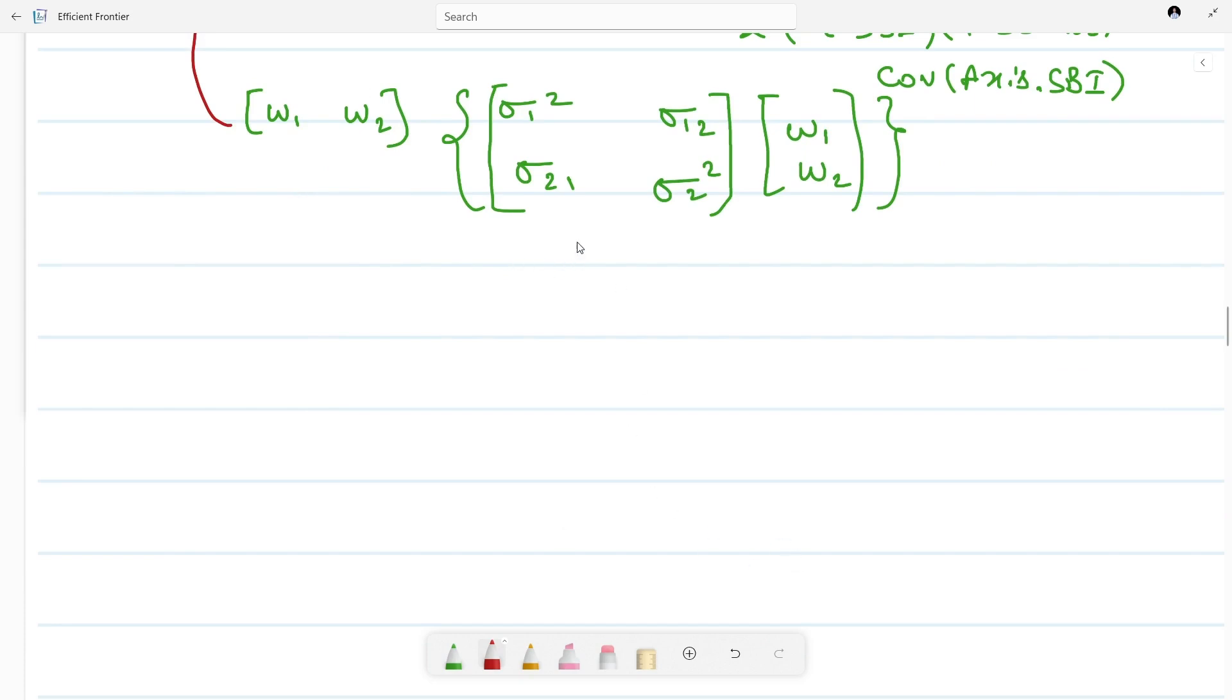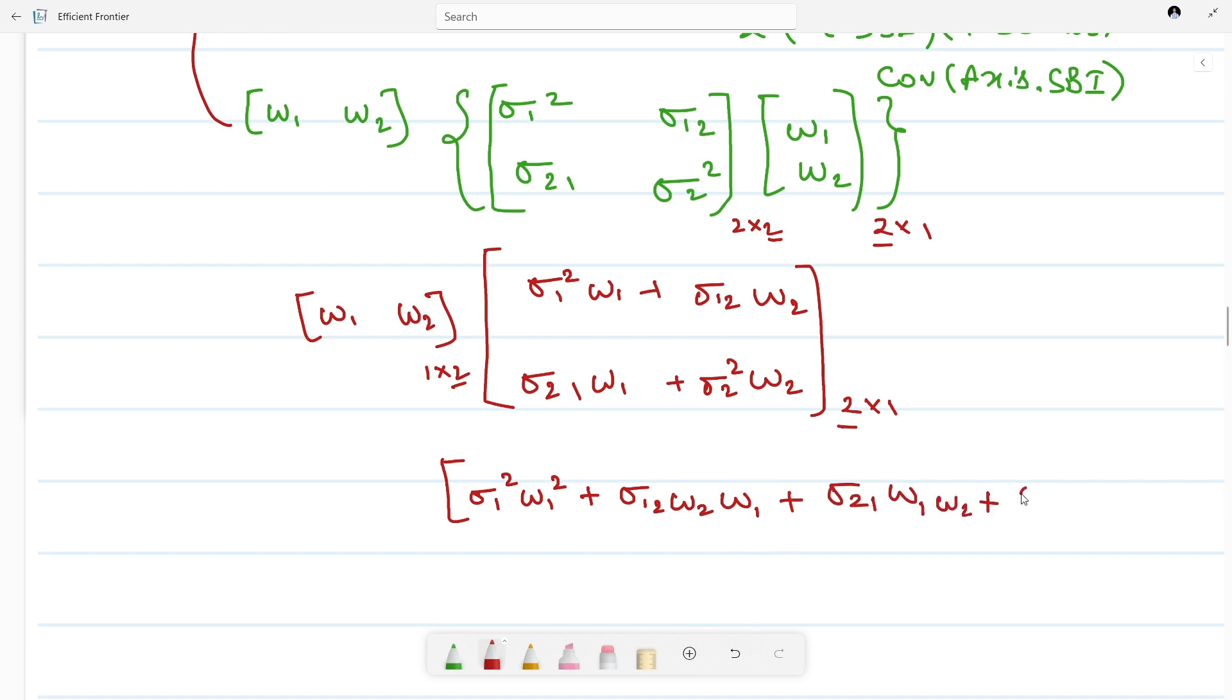Let me make it clear. If we multiply this inner part, this is nothing but σ₁²W₁ + σ₁,₂W₂ in the first row, and σ₂,₁W₁ + σ₂²W₂ in the second row. So first row, first column. Since this was a 2×2 matrix and this was 2 rows, 1 column, this matrix multiplication is possible and we are getting 2 rows, 1 column. This is equal to this.